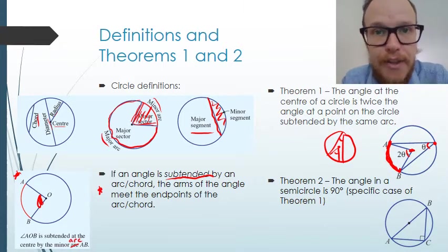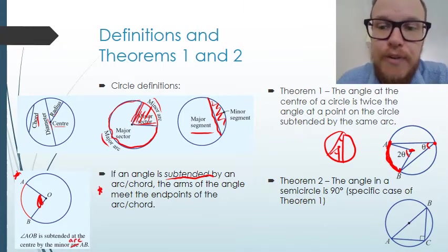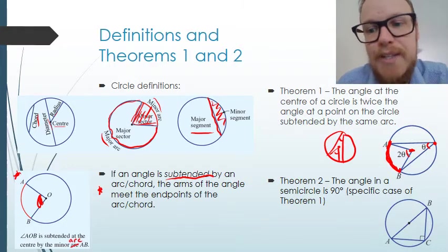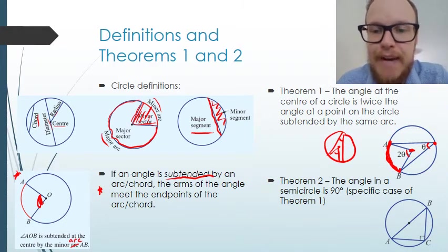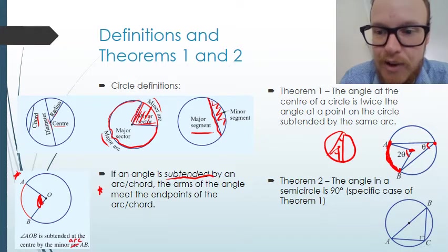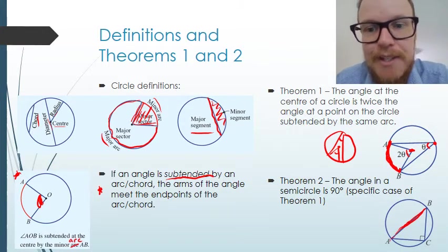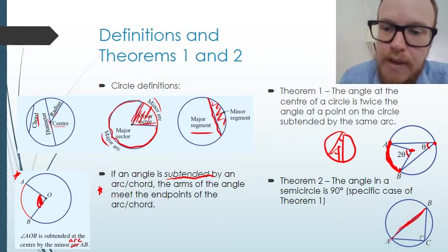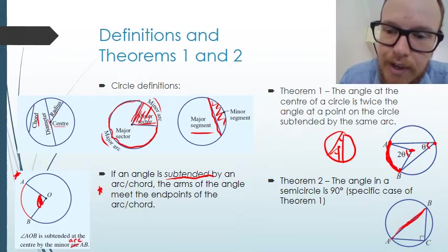Our second theorem is a special case of theorem one — the case where we have a semicircle, meaning the diameter goes all the way across through the centre of the circle. The angle at the centre is going to be 180 degrees.